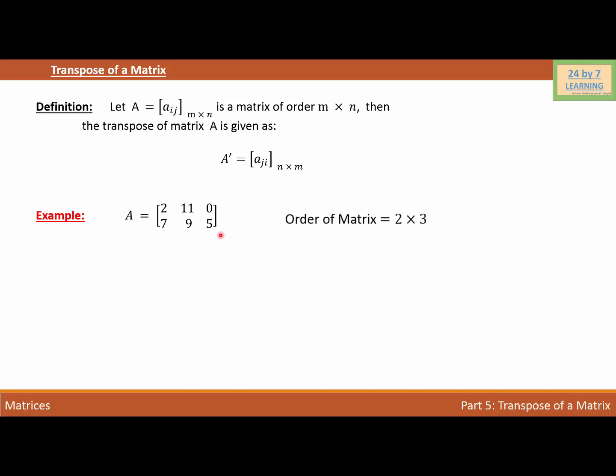Let's find the transpose of the matrix. Transpose is always represented by A dash or AT. So the transpose of this matrix A is A dash. We need to convert rows into columns and columns into rows.